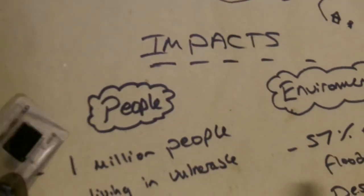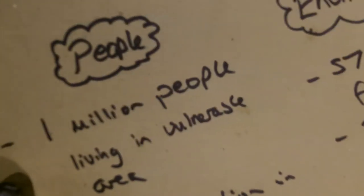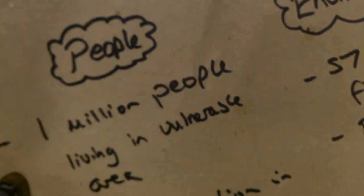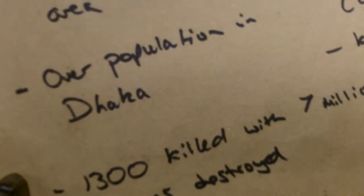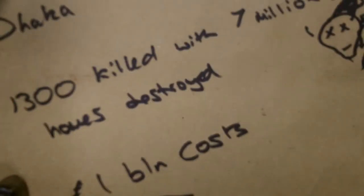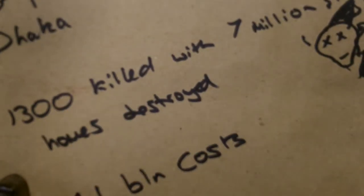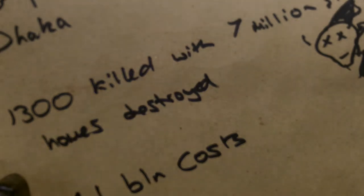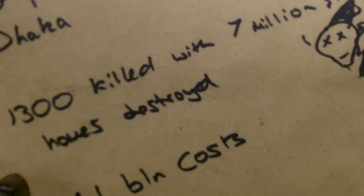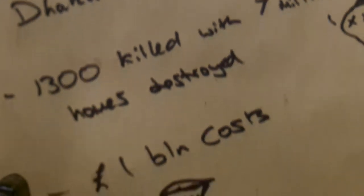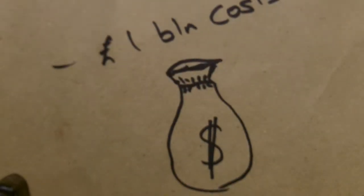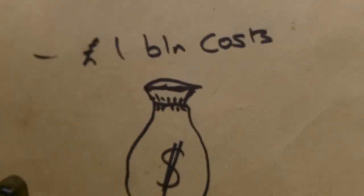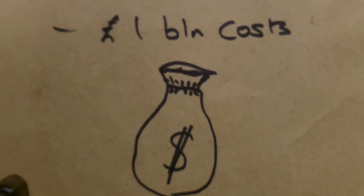These impacts — we'll start with the human impacts. One million people were living in very vulnerable areas prone to flooding. This led to overpopulation, which helped spread disease that killed over 1,300 people. This flooding also destroyed seven million homes. The overall cost of this flooding was one billion pounds.